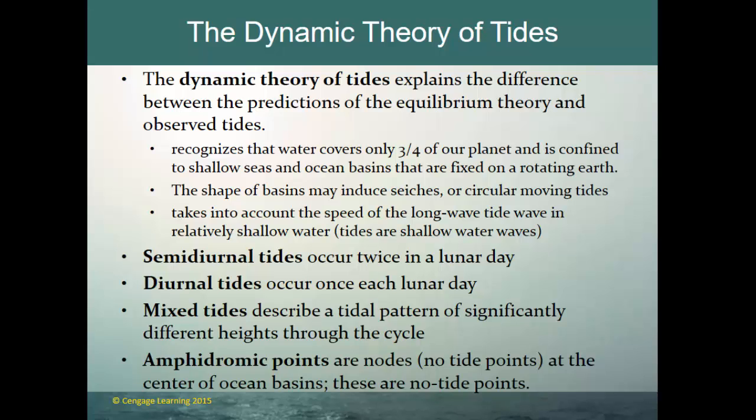There are three basic types of tides: semi-diurnal, diurnal, and mixed. The word diurnal means daily — semi-diurnal means twice a day, and diurnal means once a day. Semi-diurnal tides occur twice in a lunar day, diurnal tides occur once each lunar day, and mixed tides describe a tidal pattern with significantly different highs and lows through a cycle.